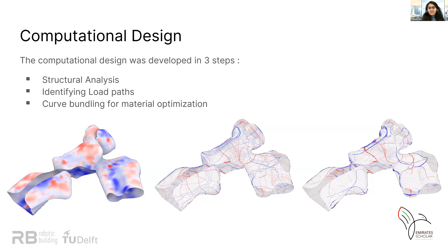The second step is to identify the tension and the compression lines and generate these load paths. The third step is to combine the result of the utilization of the geometry and the identification of the tension and compression lines, and use this as an input for deciding how to group the tension and compression curves. This curve bundling is done for material optimization and to determine the thickness of the beams that will be generated.